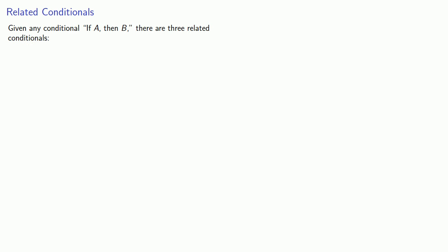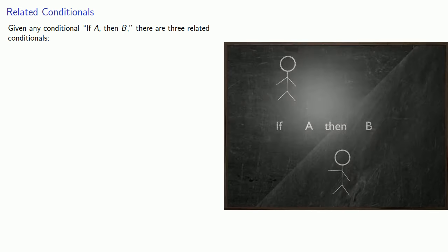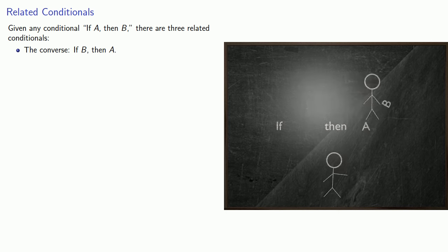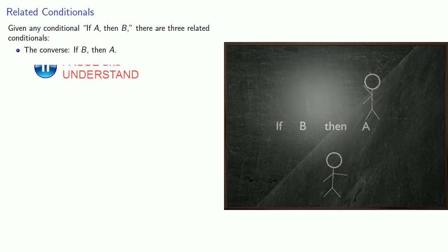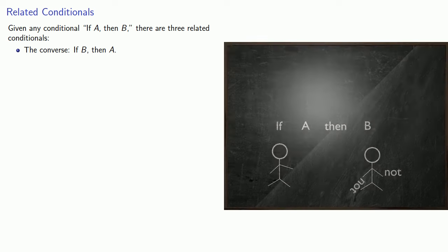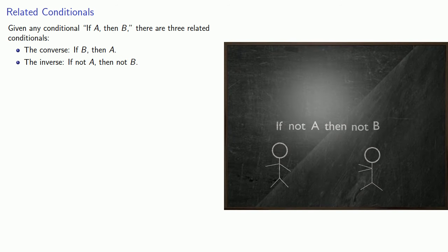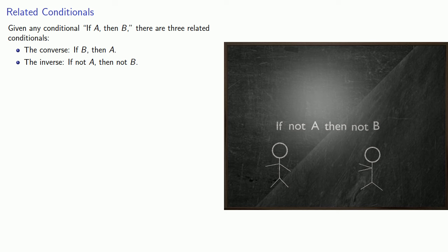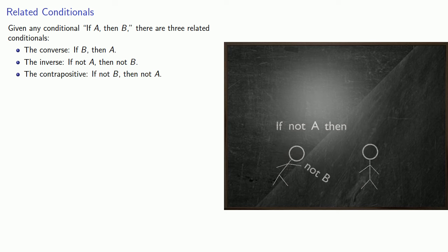Given any conditional 'if A, then B,' there are three related conditionals. The converse, where we switch the antecedent and consequent: if B, then A. There's also the inverse: if not A, then not B. And finally, the contrapositive: if not B, then not A.